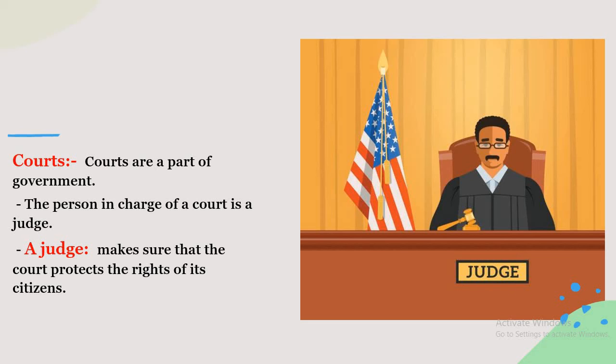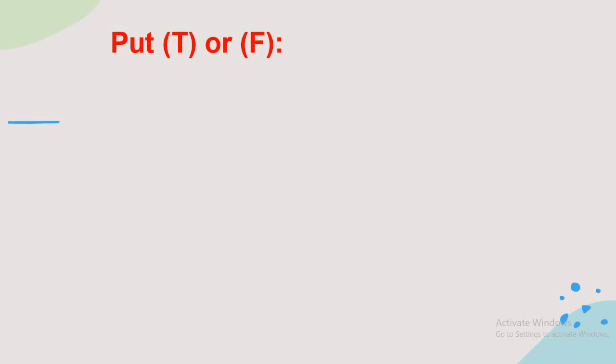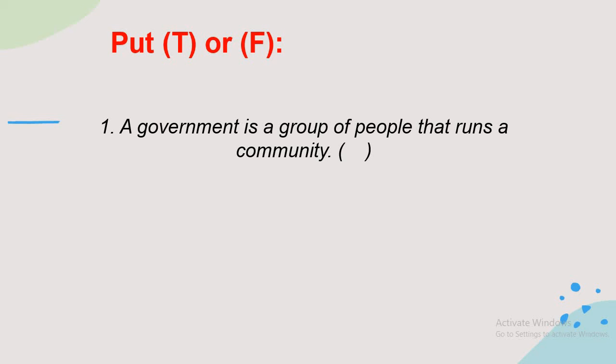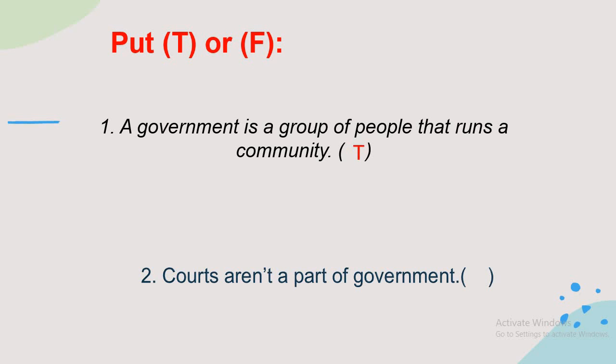Now we have some tasks. True or false — number one: a government is the group of people that run a community. True! Second: courts aren't a part of the government. Is that right? No, false! Courts are a part of the government.